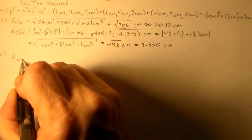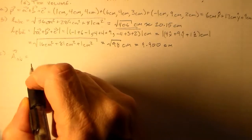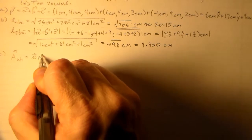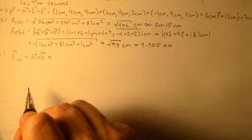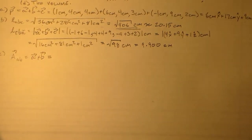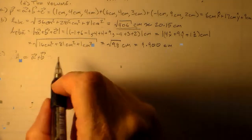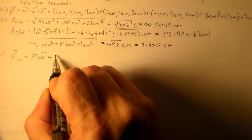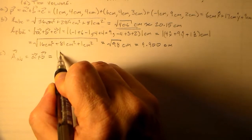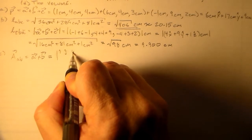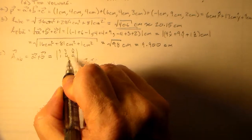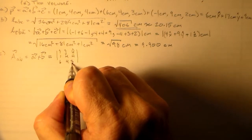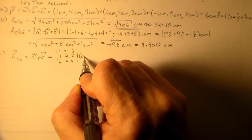We want the directed area for the AB face — that's just A cross B. That gives the area of the parallelogram making up that face of the parallelepiped. We've got A = (1, 4, 4) and B = (6, 4, 3), all in centimeters, and we're going to compute the cross product.